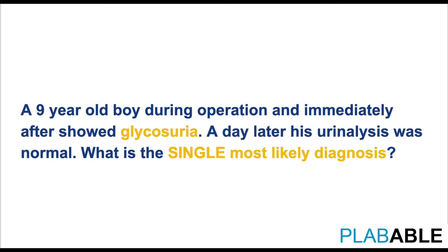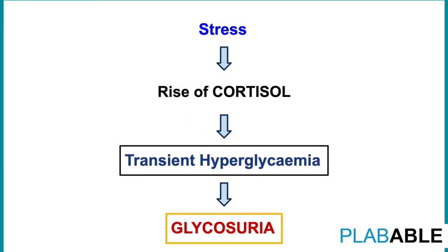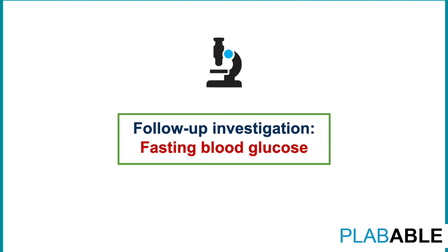Our first case is a nine-year-old boy who showed glycosuria during and immediately after an operation. A day later his urine analysis was normal. The diagnosis is stress-induced hyperglycemia. Whenever the body undergoes stress such as surgery or infection, cortisol is released, leading to hyperglycemia — a normal finding. To confirm this is not established diabetes, stress-induced hyperglycemia will not last more than three days. We can perform a fasting blood glucose and call the patient back after a week as a follow-up investigation to confirm it is a normal post-operative finding.